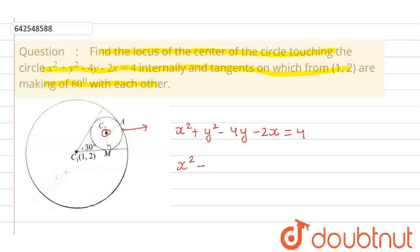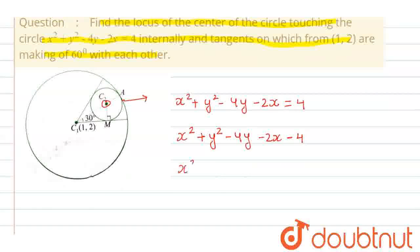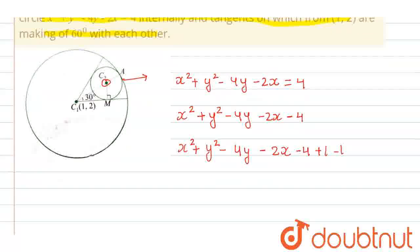From here we get the equation as x² + y² - 4y - 2x - 4 = 0. We can rewrite this as x² + y² - 4y - 2x. Now, we will add 1 and subtract 1 from our equation, so it will become x minus 1 whole square plus y² - 4y - 5 = 0.